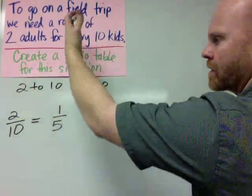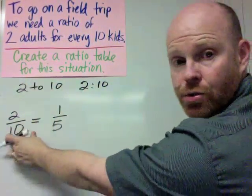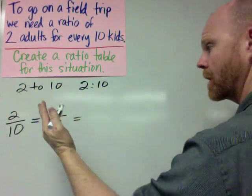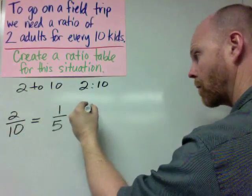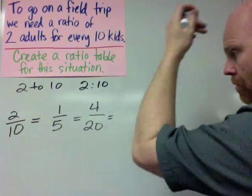And then there's an infinite number of ratios that are all equivalent to 2 to 10. 2 to 10, 1 to 5, in no particular order. We can do 4, we could do 4 to 20.